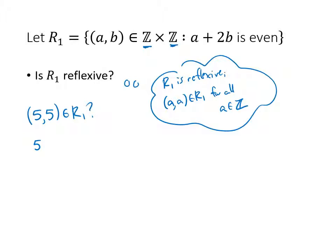My a is 5, my b is also 5, and 5 + 2(5) works out to be 15. 15 is not even, so that means (5, 5) is not in R1. But in order for this relation to be reflexive, all of the pairs (a, a) have to be in R1. Here we found one that isn't, so that means not all of those pairs are in this relation, and so the relation is not reflexive. Our answer here would be no, and this would be our counterexample.